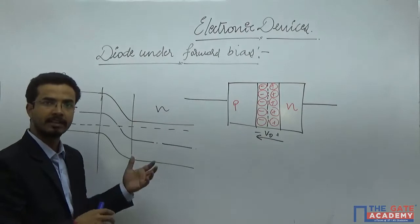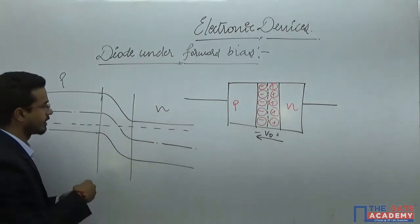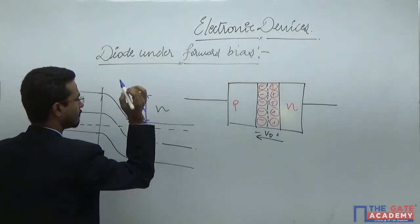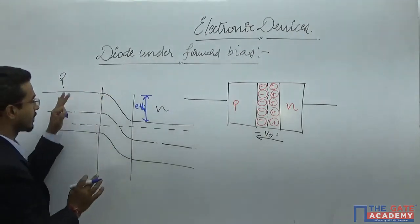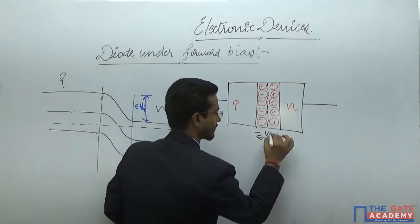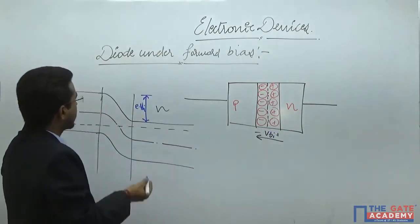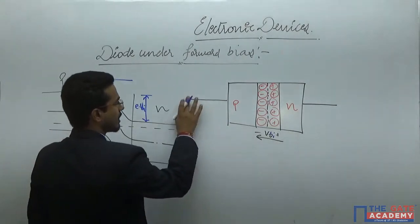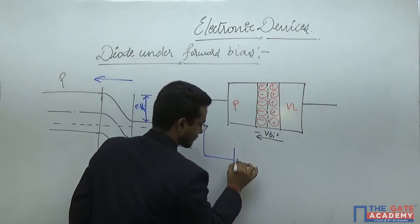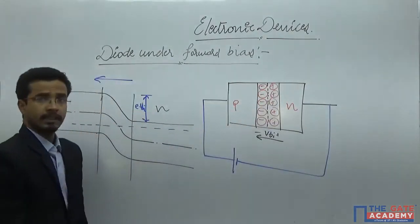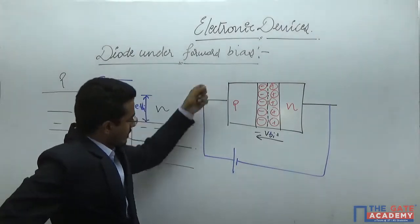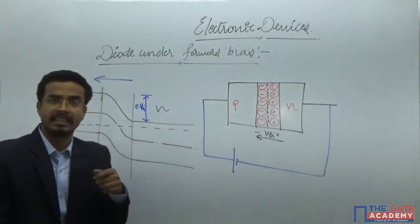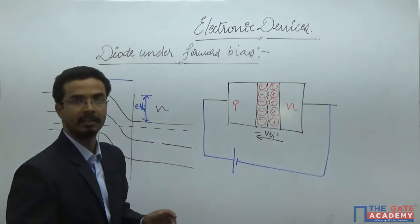Understanding this energy band diagram is a prerequisite for this lecture. The total barrier height is E times VBI — that is the built-in potential V0 or VBI across this junction. The electric field is in this particular direction. Now I will apply a voltage source across the junction such that the P side has higher potential than the N side, which puts the junction under forward bias. We will clarify why it is called forward bias shortly.